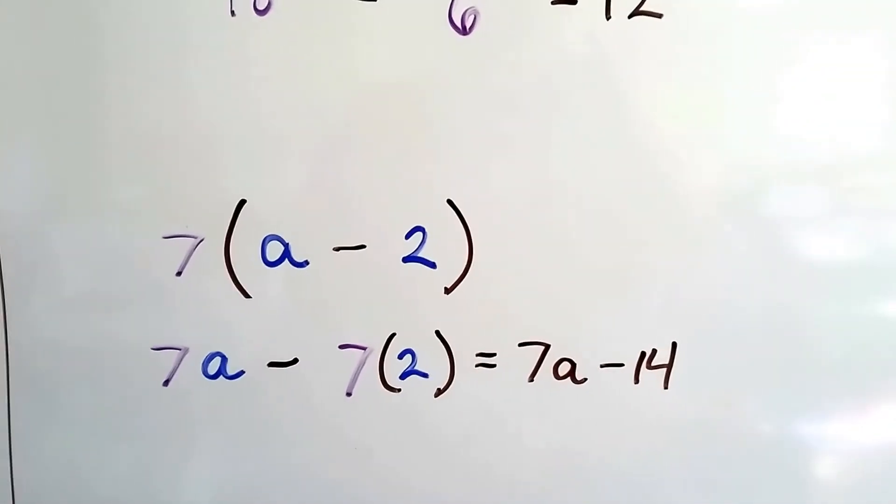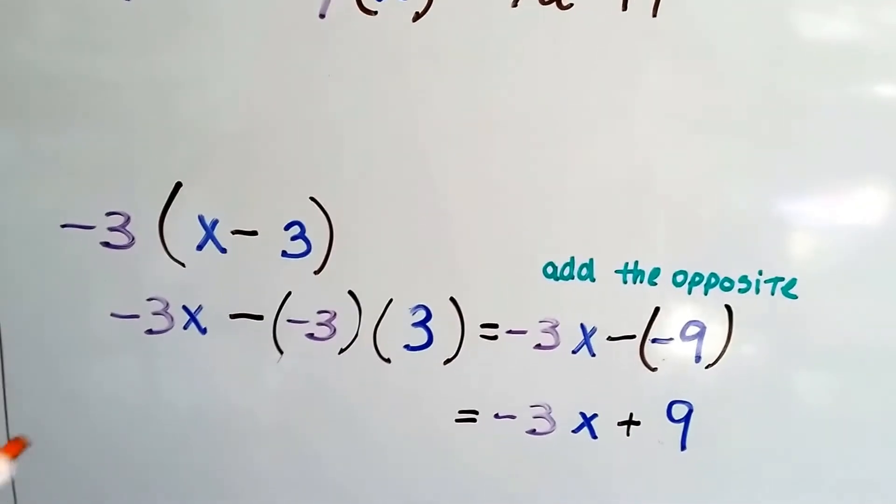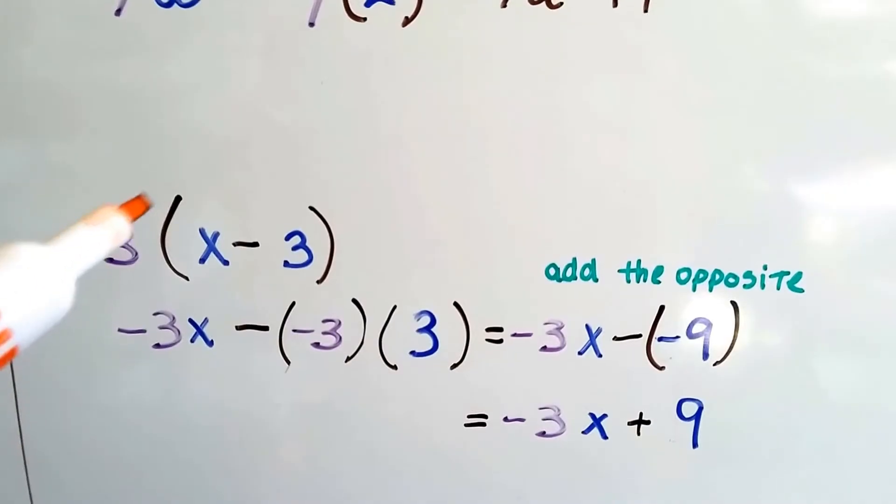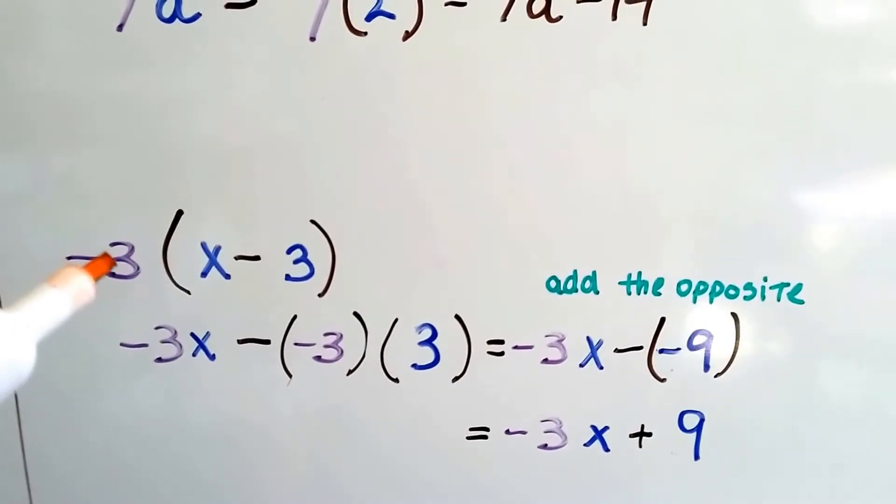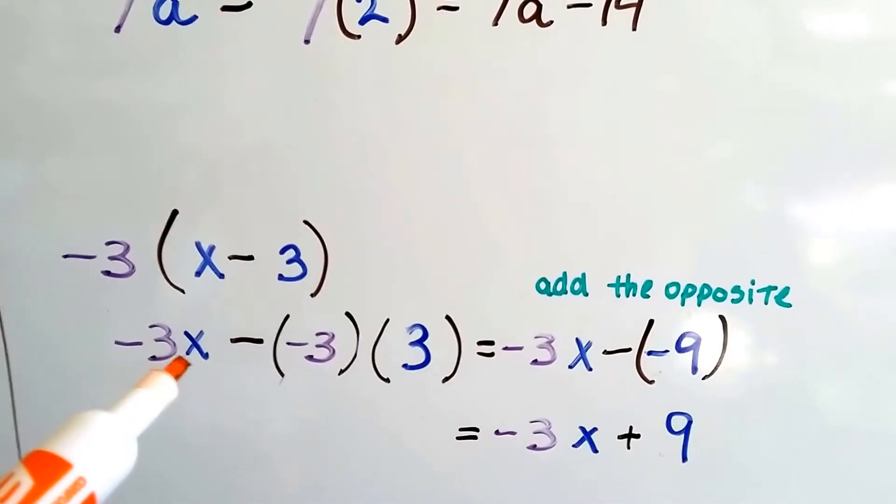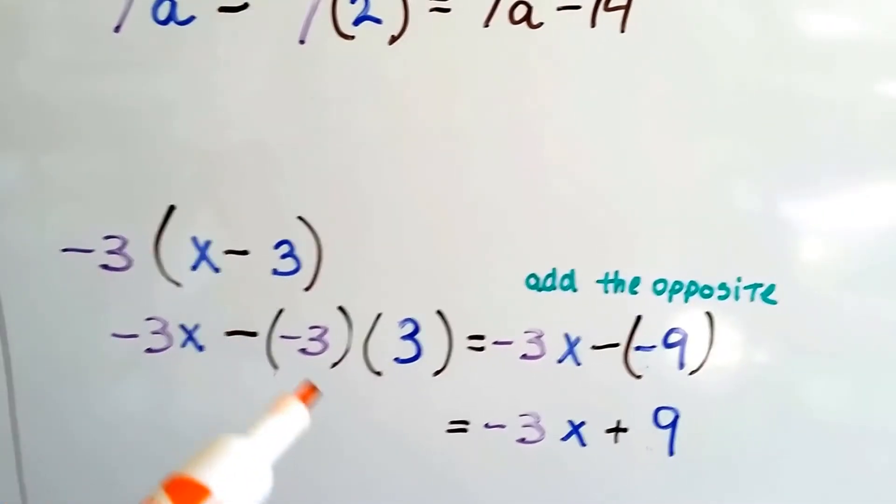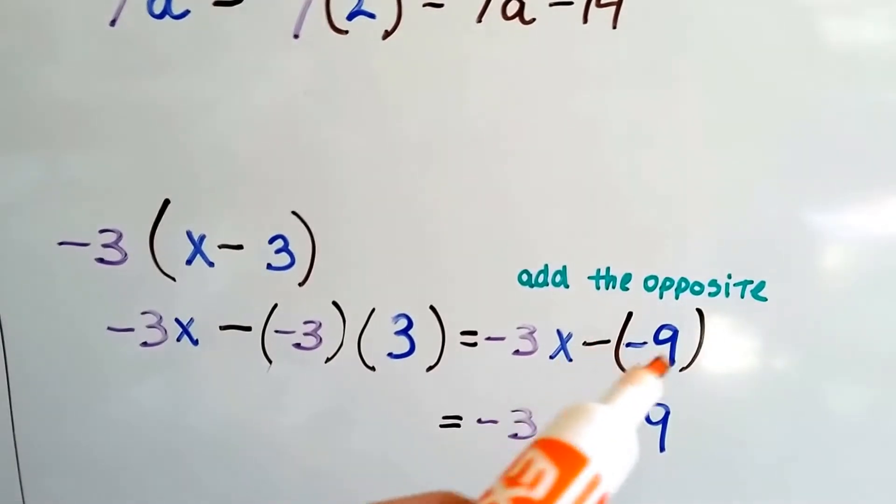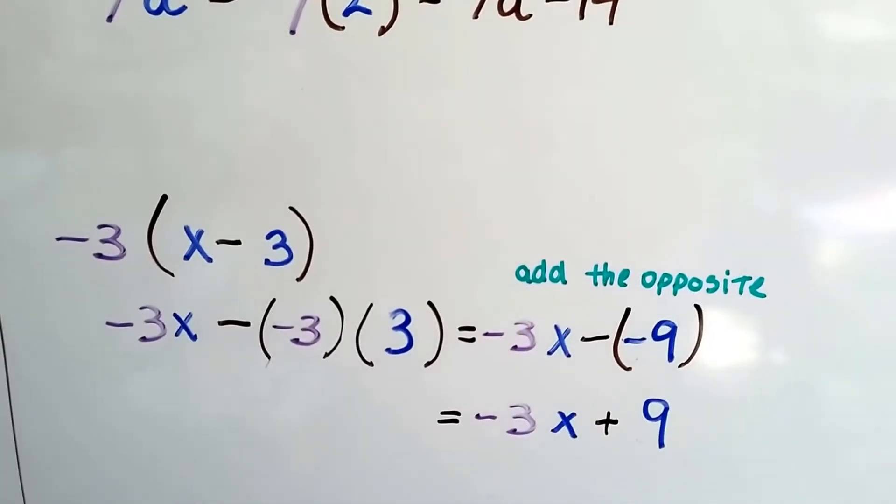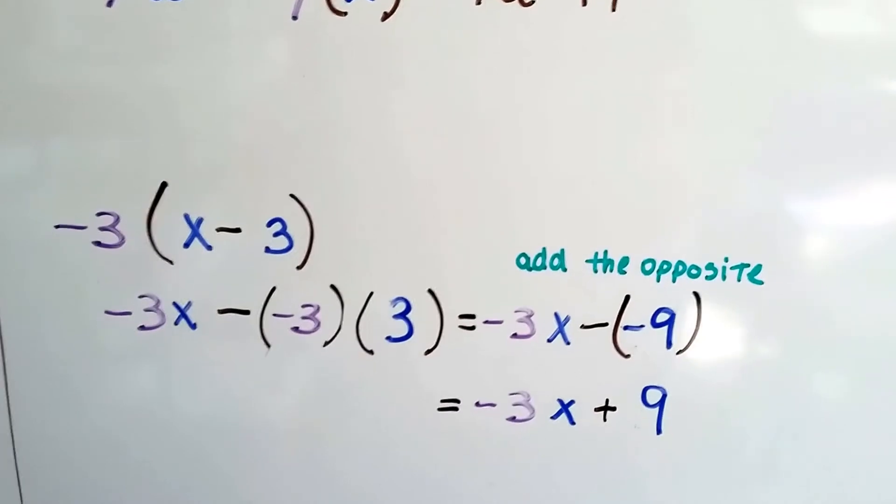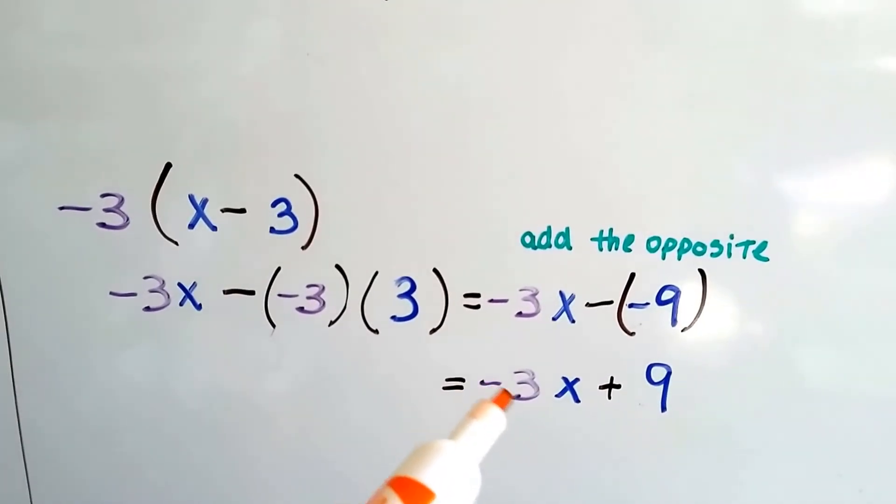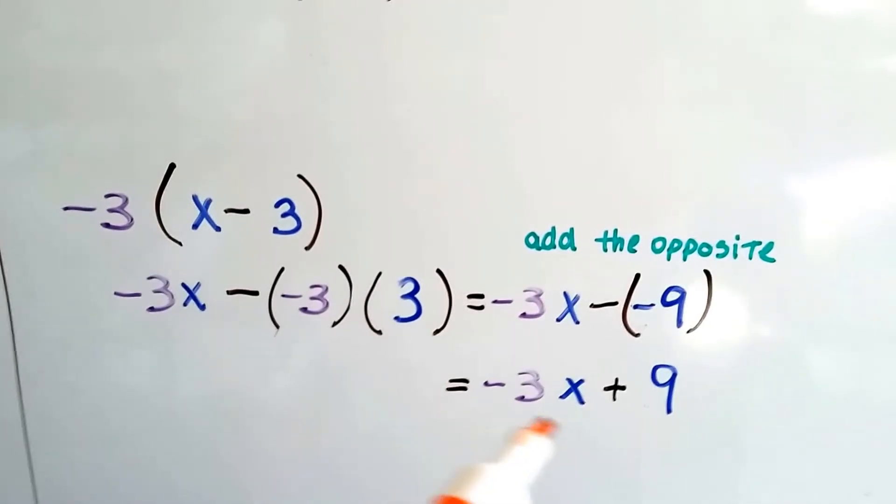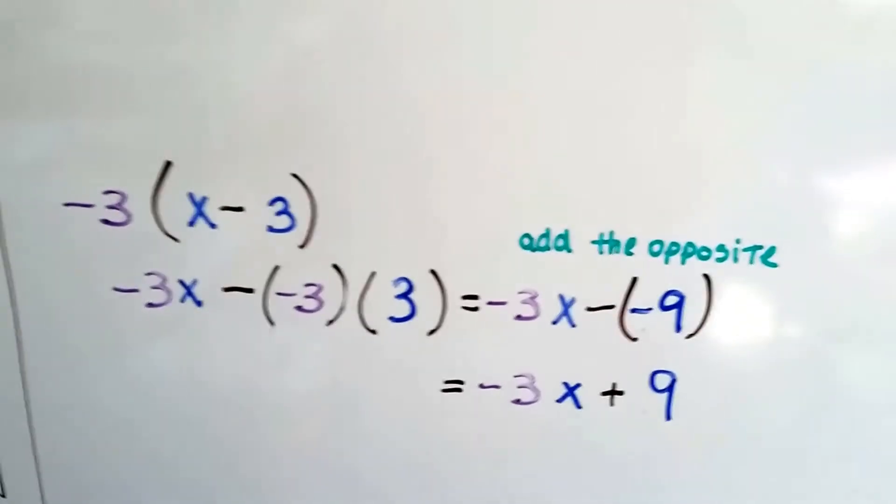What happens when we throw in a negative with a variable? Well, now we've got negative 3 times x minus negative 3 times 3. Negative 3x minus, and here we've got the negative 3 times 3. That makes a negative 9. And remember when we subtract a negative, we add the opposite? There'll be a link for that video in this description too. That gives us negative 3x plus 9. Because we don't know what the x is, this is as much as we can simplify this expression.